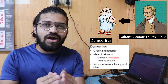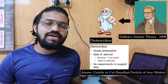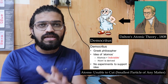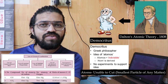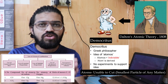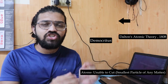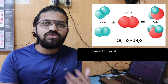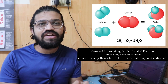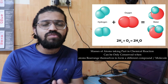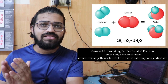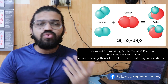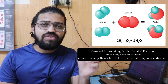The meaning of 'atoms' is 'unable to cut.' Dalton referred to two basic laws: the law of chemical combination and the law of conservation of mass. The law of chemical combination works on conservation of mass — in any chemical reaction, the atoms taking part can rearrange themselves to form a different compound or molecule.